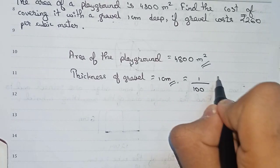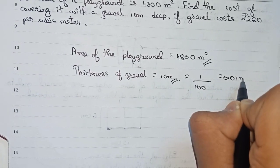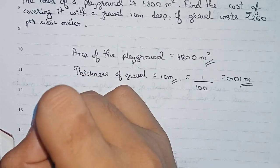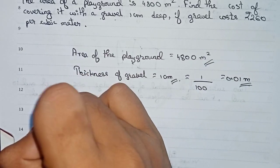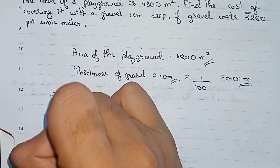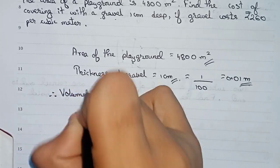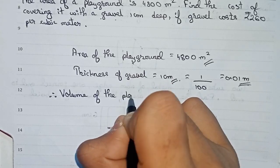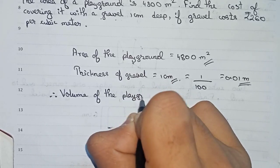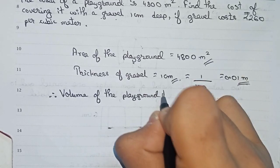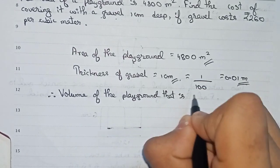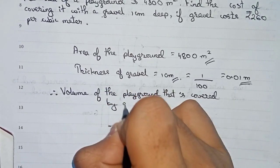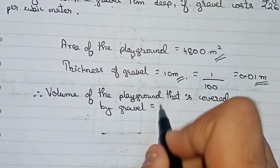From this information we can find out the volume. Therefore, volume of the playground that is covered by gravel will be equal to area of the ground multiplied by 0.01.